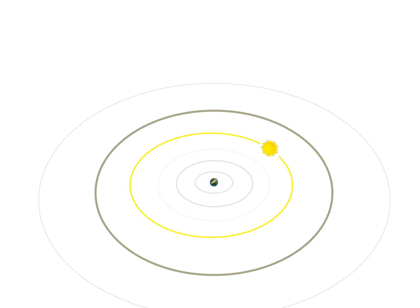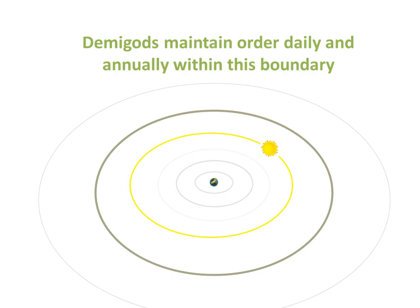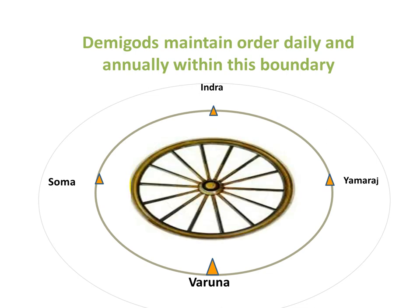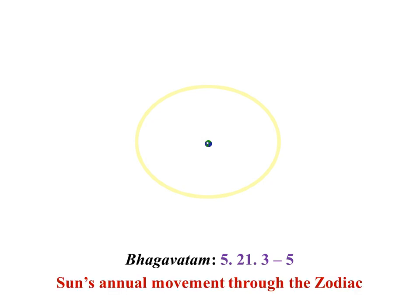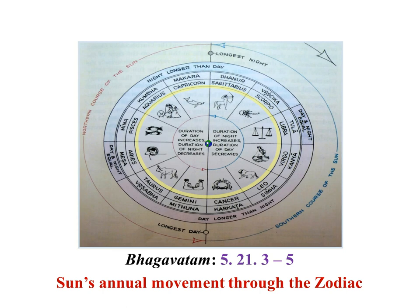Back again here, showing the Bhoomandala with the Sun and also the Manasatara mountain. Demigods maintain order daily and annually within this boundary. The demigods include Indra, Yamaraj, Varuna, and Soma. So they are protecting the Earth here. And with the Sun's chariot journey all around the Earth here on an annual basis, this is represented by a chariot wheel. The segments of that wheel represent the different seasons and parts of the year. And in the Bhagavatam 5th canto 21:3-5, we learn about the Sun's annual movement through the Zodiac, describing the southern course of the Sun, the northern course of the Sun, and the Sun signs as the Sun passes through the Zodiac signs throughout the seasons.